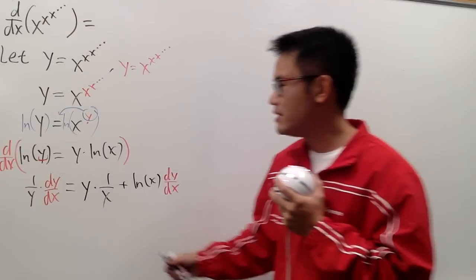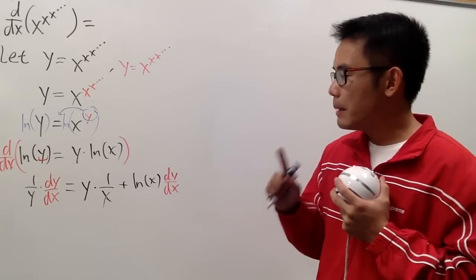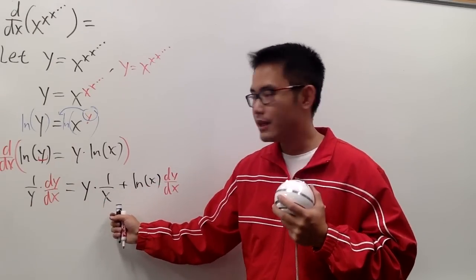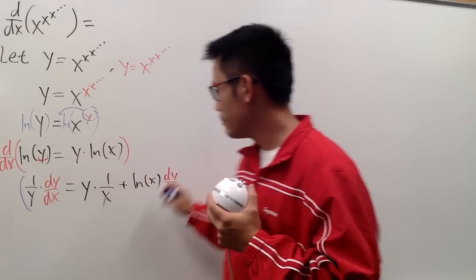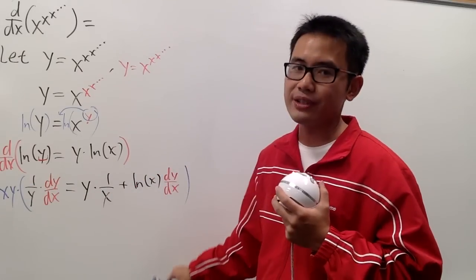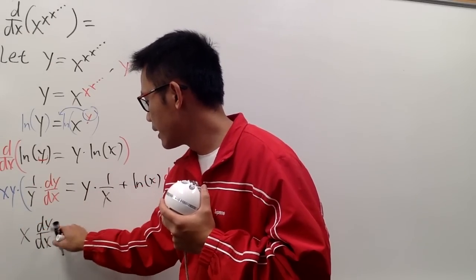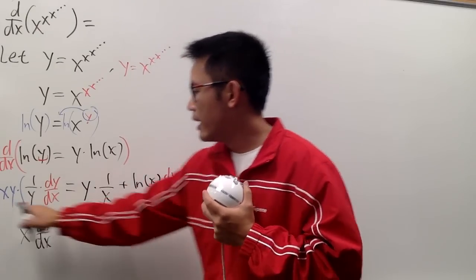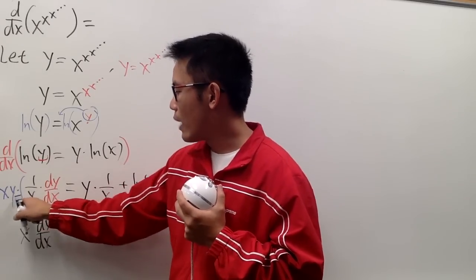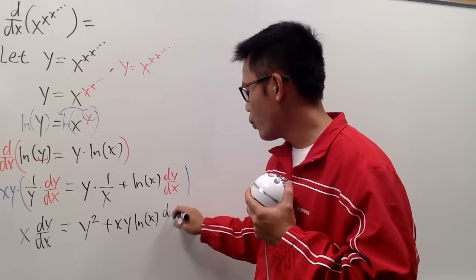So this is what we have. We can see dy/dx appears on both sides. Before collecting them, let's clear the fractions — we have y in one denominator and x in another. So we multiply everything by x times y. On the left side, that gives us x times dy/dx. On the right side, x cancels to give y times y, which is y squared, and then plus xy times ln x, times dy/dx.